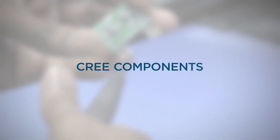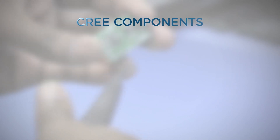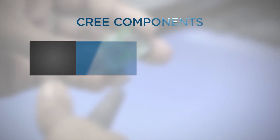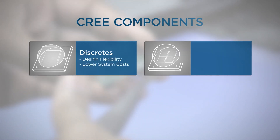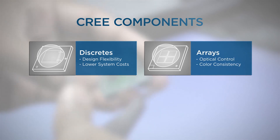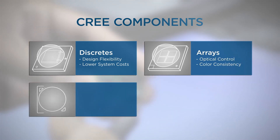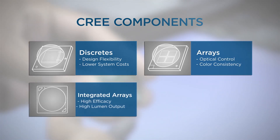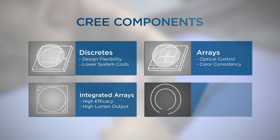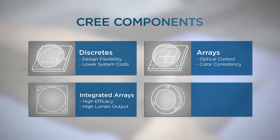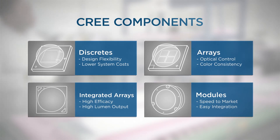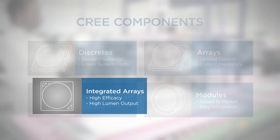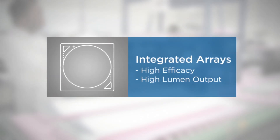We have four major types of LED components: Discreets, Arrays, Integrated Arrays, and Modules. This video will focus on our revolutionary Xlamp CXA Integrated Arrays.